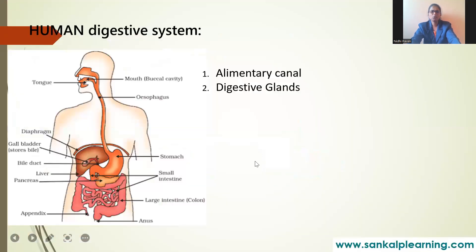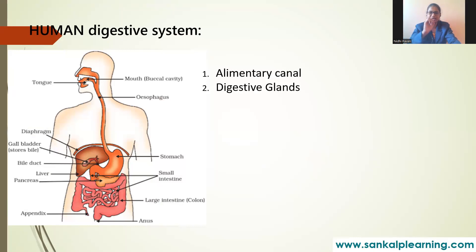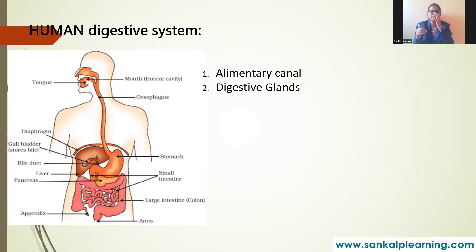Now we move to the human digestive system and nutrition in human beings. Nutrition in human beings is also holozoic — food is digested, absorbed, and assimilated inside the body. The digestive system has two subsystems: the alimentary canal, which covers the whole digestive system from mouth to anus, and the digestive glands.